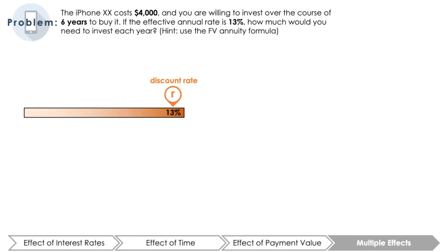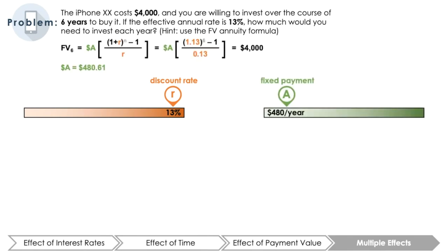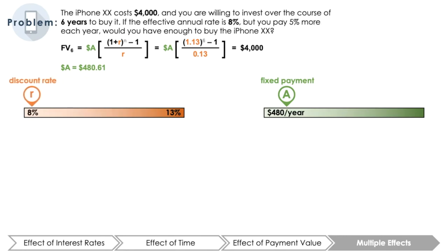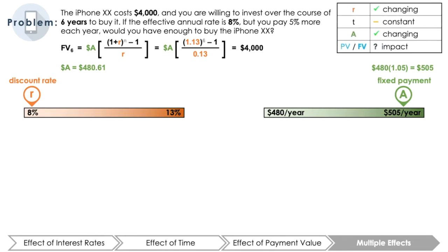In order to have enough money to buy the iPhone 20, $480.61 would need to be invested each year over the six-year time period. Now, what if the effective annual rate was 8%? This is 5% less than the rate in the previous example. Let's see what would happen if you were willing to pay 5% more annually over six years to compensate the difference in the annual rate, i.e., pay $505 because $480 times 1.05 is $505. Would you have enough money to buy the iPhone? Pause here and see for yourself.